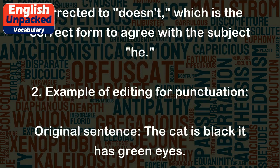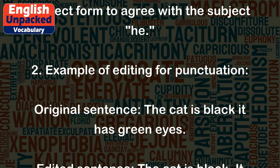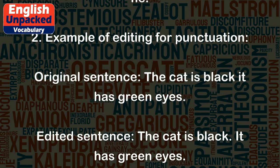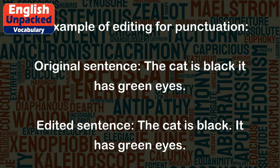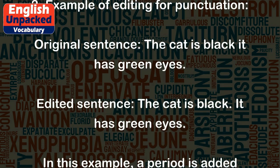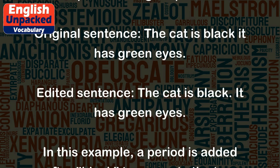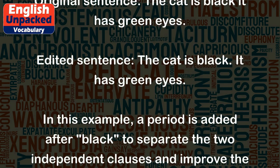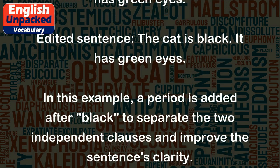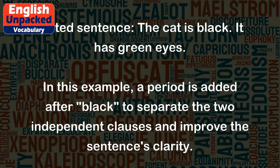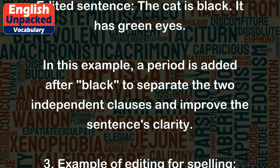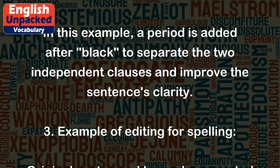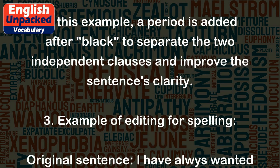Example 2: Editing for punctuation. Original sentence: "The cat is black, it has green eyes." Edited sentence: "The cat is black. It has green eyes." In this example, a period is added after "black" to separate the two independent clauses and improve the sentence's clarity.